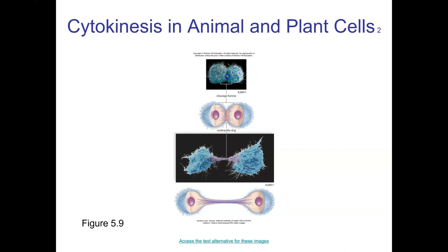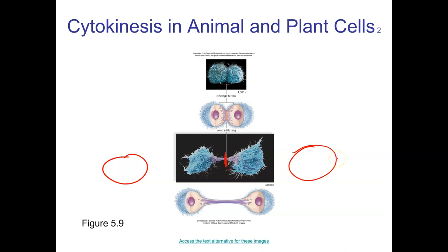Here you can see that cleavage furrow, and you can see it up here as well. Down here, you see the cells almost completely separated. Eventually that will separate completely and you'll have one daughter cell on each side — they will be identical to the original parent cell.